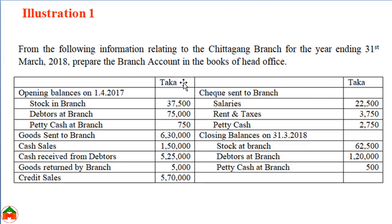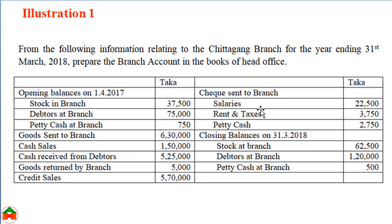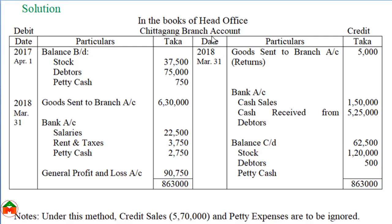From this illustration we are going to learn about the practical process of preparing the branch account. From the following information relating to Chittagong Branch for the year ending 31st March 2018, we need to prepare a branch account in the books of the head office. The information provided includes: opening balances of stock, debtors, and petty cash; goods sent to branch; cash sales; cash received from debtors; goods returned by the branch; credit sales; checks sent to branch for salaries, rent and taxes, and petty cash; and closing balances of stock, debtors, and petty cash.